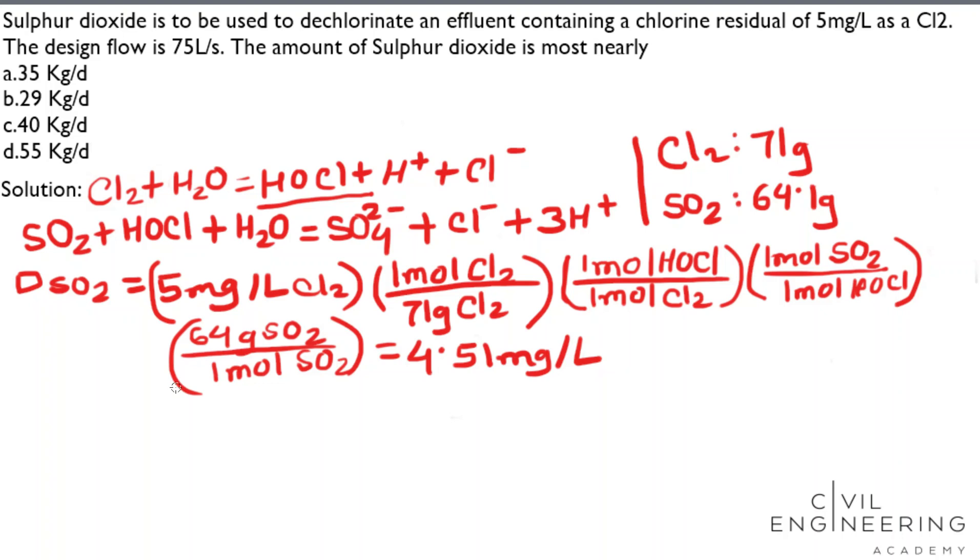Now, we have to calculate the mass of sulfur dioxide. So, our equation is M equals to dose of sulfur dioxide multiplied by Q.